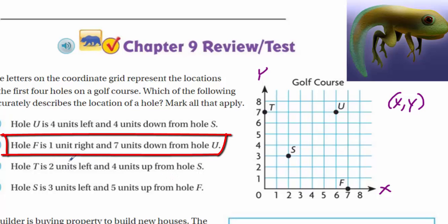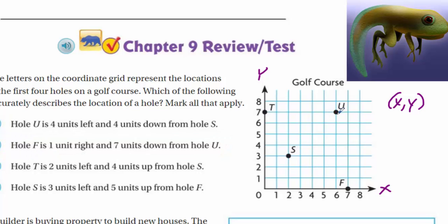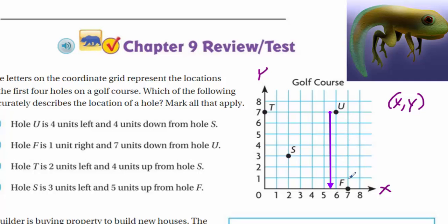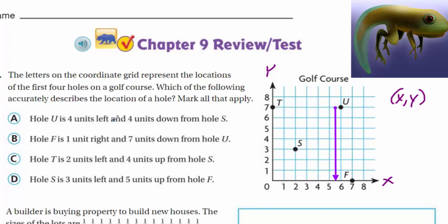It says hole F is one unit right and seven units down from hole U. So if we're here at hole U, is hole F one unit right of that? Yes, it is one unit — I can see the F there. So F is one unit right of hole U. Is it also seven units down from hole U? One, two, three, four, five, six, seven — yes it is, seven units down. I like you, B. You work for me!